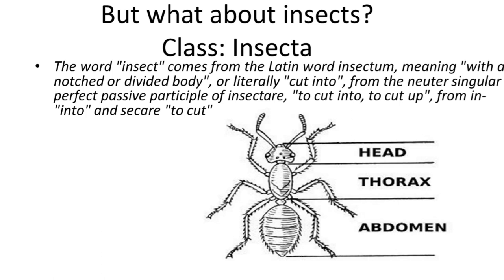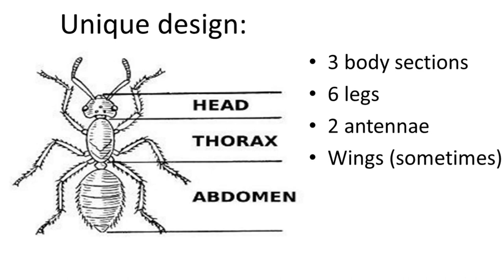But what about insects? Finally, we have arrived at the creatures we are truly going to discuss today — the insects. Insects are a class of arthropods — class Insecta under the phylum Arthropoda. The word 'insect' comes from the Latin 'insectum,' meaning 'with a notched or divided body,' or literally 'cut into,' from 'insectare,' which means 'to cut into or cut up.' Basically, it refers to their cut-up, jointed bodies.